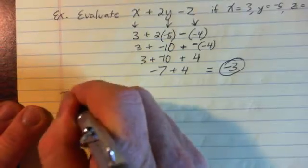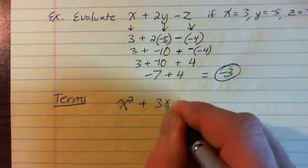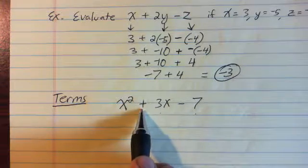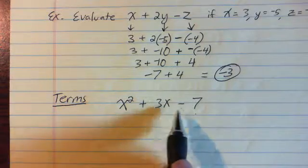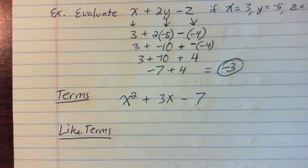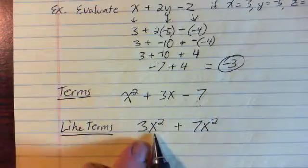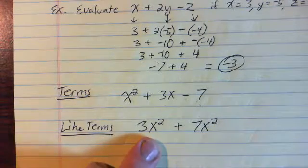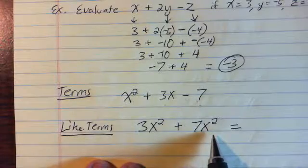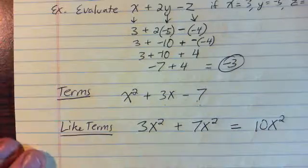Terms in algebra are separated by plus or minus signs. If you have x squared plus 3x minus 7, there are 3 terms in that expression. Like terms are terms that have the same variable part. For example, 3x squared and 7x squared have the same variable part x squared, so you can add them together: 3 of them plus 7 of them makes 10, so the result is 10x squared.